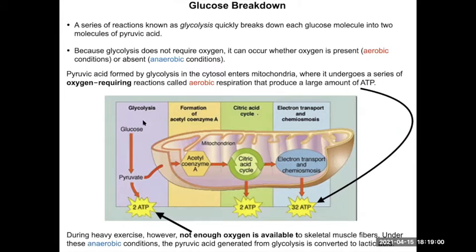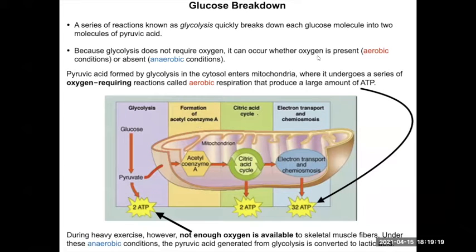These two forms — aerobic and anaerobic glucose breakdown — will be important later when we talk about fiber types. The key difference is how much oxygen you have, which is reflected in your blood supply. There's a very big difference between these two pathways, and also in how fast each process is.